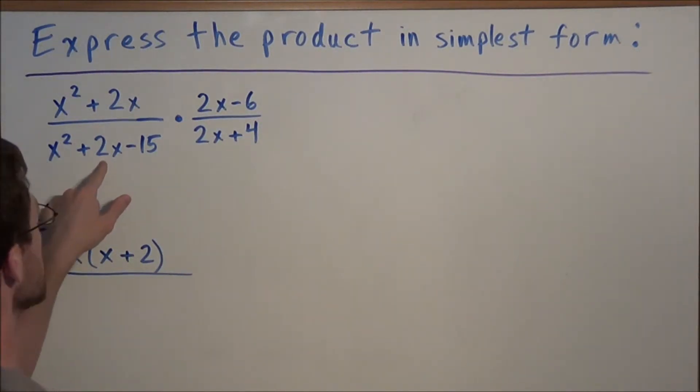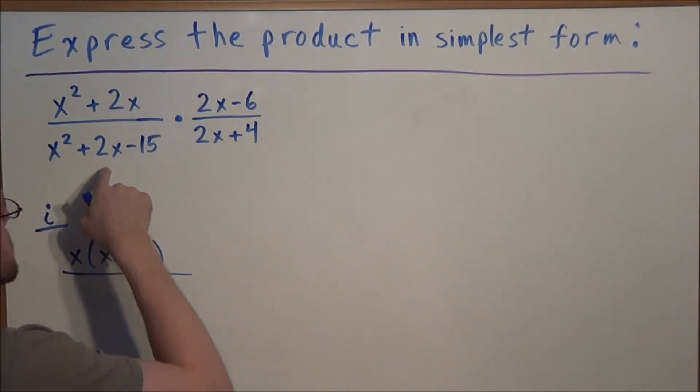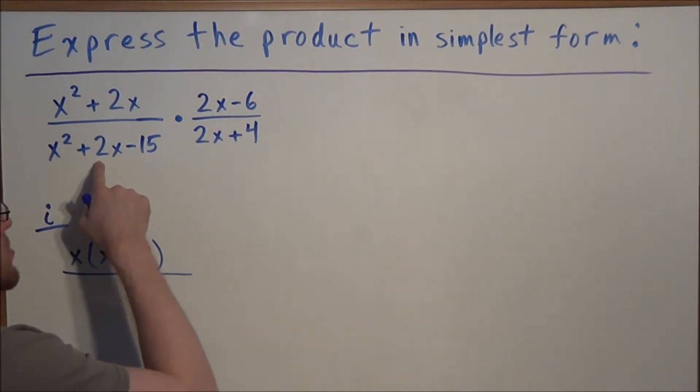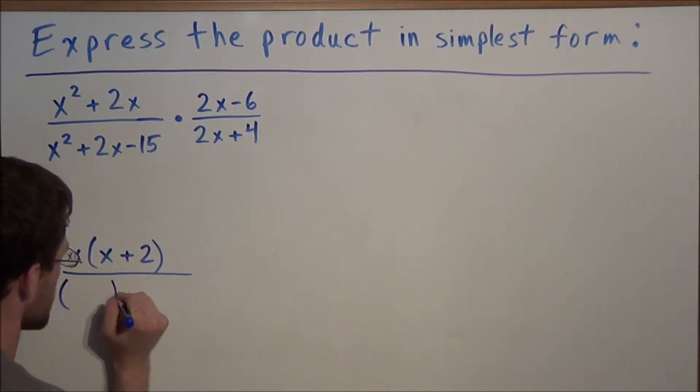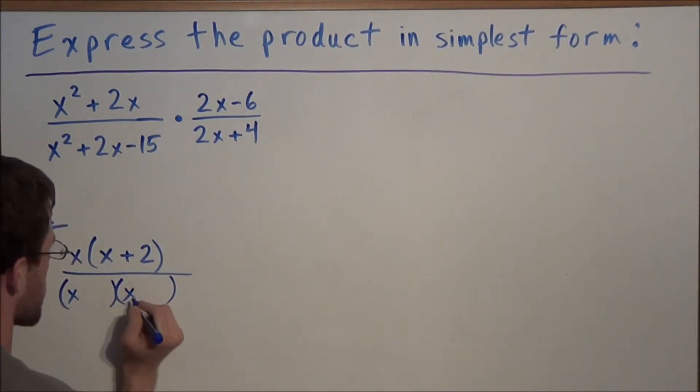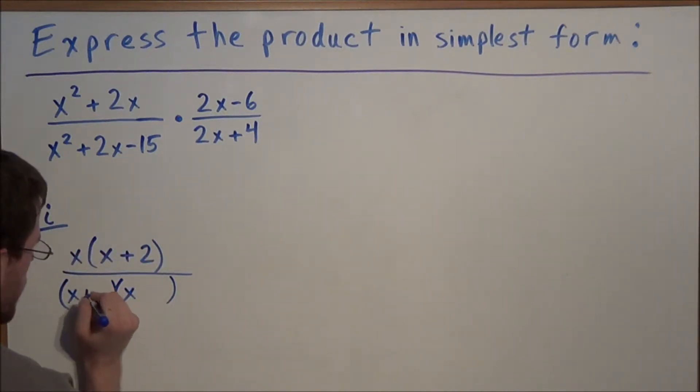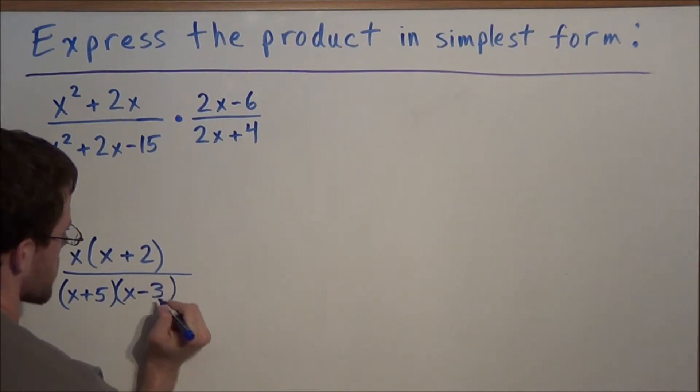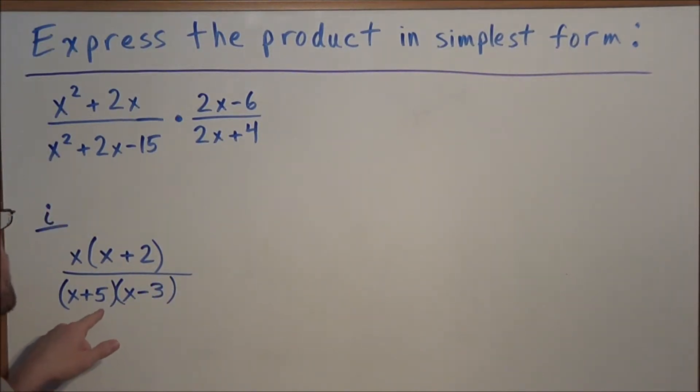But now for the second piece when we're factoring a trinomial we need to ask ourselves what two numbers multiply to the final term and add to the middle term. So we're looking for two numbers that multiply to negative 15 and add to positive 2. And if we think about this a little bit longer we'll see that we have x plus 5 times x minus 3. And this could quickly be checked by 5 plus negative 3 is positive 2 and 5 times negative 3 is negative 15.